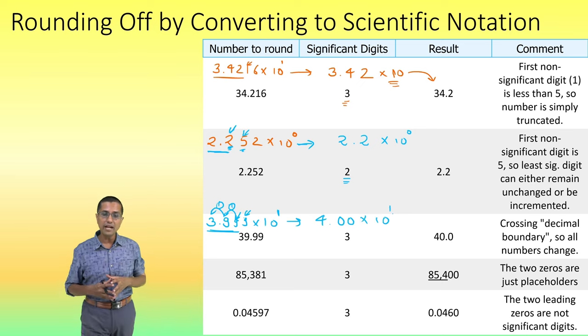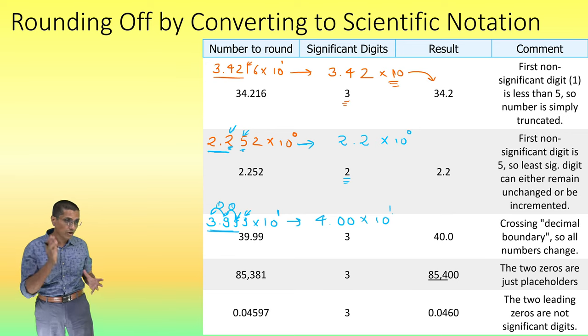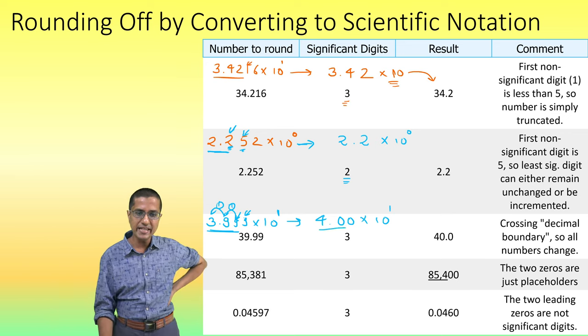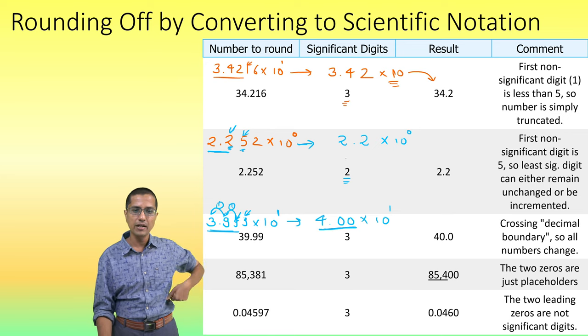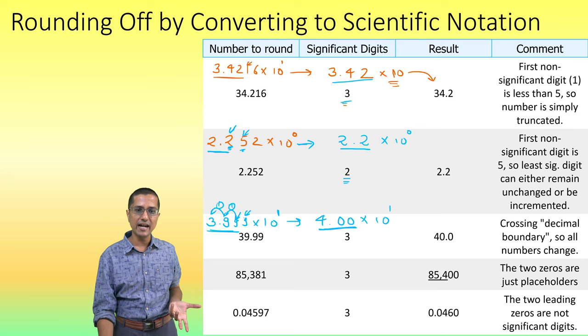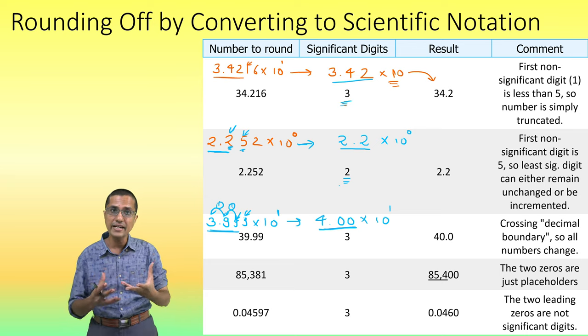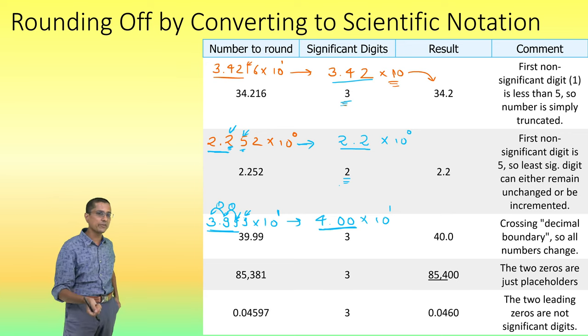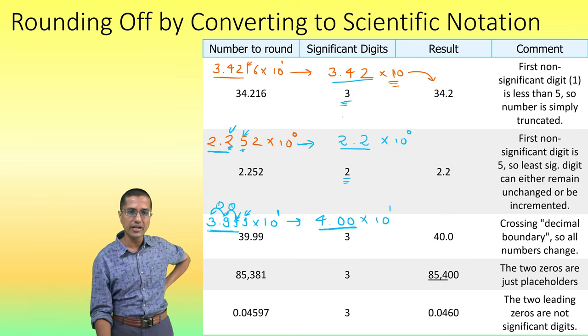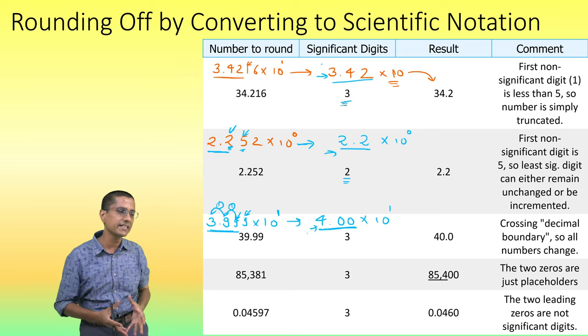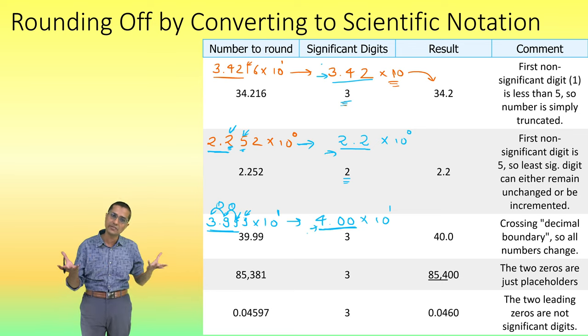So, my answer becomes 4.00 × 10¹. So, notice when we are doing the rounding in the exponential notation, I can clearly see that after rounding has happened, how many significant digits I have. So, in each case, I have the correct number of significant digits.